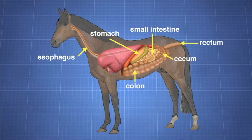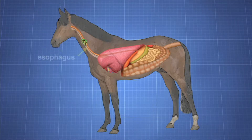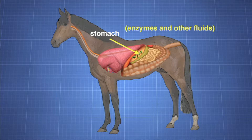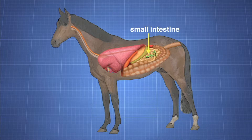A horse's digestive system starts with the mouth. Food is crushed by grinding molars, mixed with saliva, then moves from the mouth to the esophagus, and then into the horse's stomach. Contraction of smooth stomach muscles mixes enzymes and other fluids with the food. The food is partially digested in the stomach, then proceeds into the small intestine, where more enzymes from the intestine and other organs break it down into basic food molecules — for example, the breakdown of complex proteins into simpler amino acids.